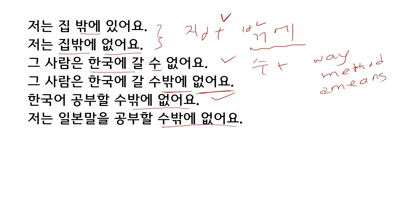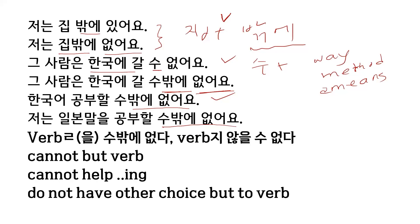I cannot but study Japanese language. The rule is: verb을 수밖에 없다, or verb지 않을 수 없다. Whenever you have this kind of structure, it is used to mean 'cannot but verb', 'cannot help but verb', or 'do not have any other choice but to verb'. 한국어 공부할 수밖에 없어요.